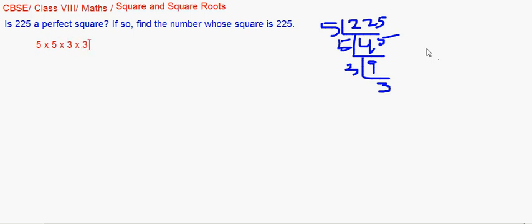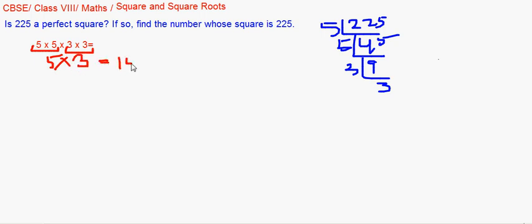We can pair each factor in groups of two. We get one pair of 5s and one pair of 3s, nothing left unpaired. So 225 is a perfect square — it is the square of 15.